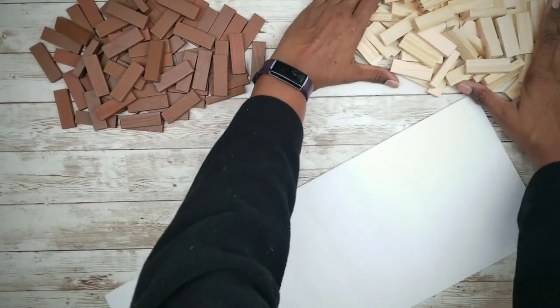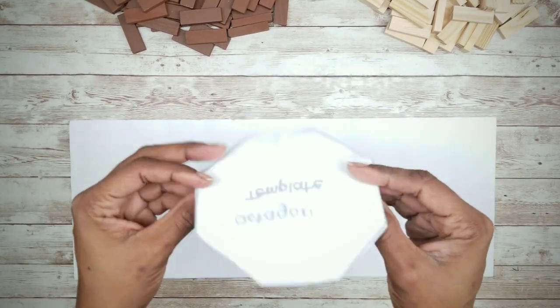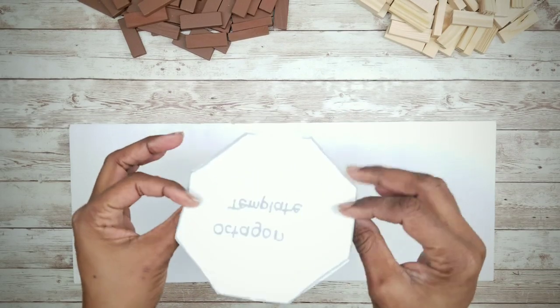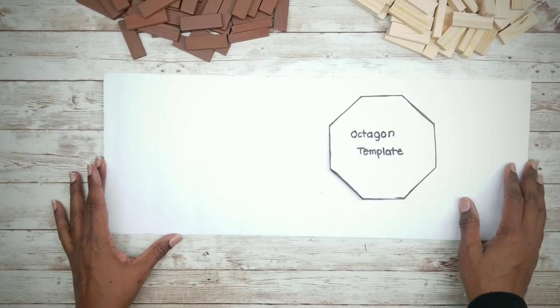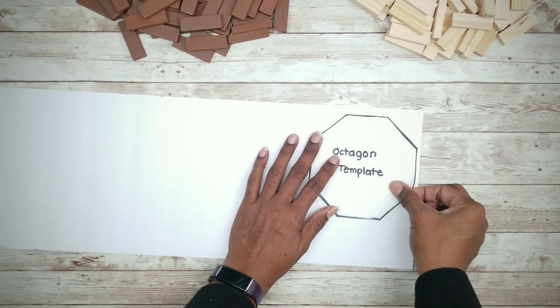Now grab your foam board. What I did is I sketched out an octagon shape and I am going to use that as a guide. You can do this as well, making sure that each side of your octagon is about 2 1⁄8 inches.